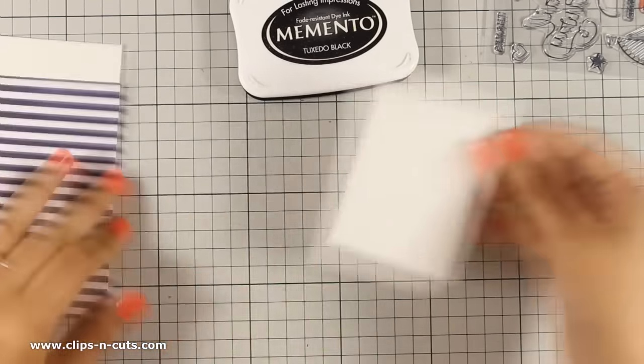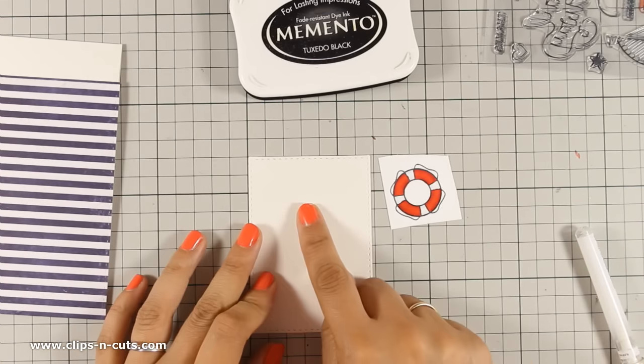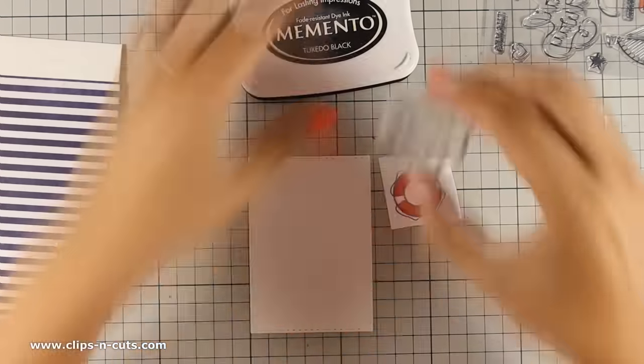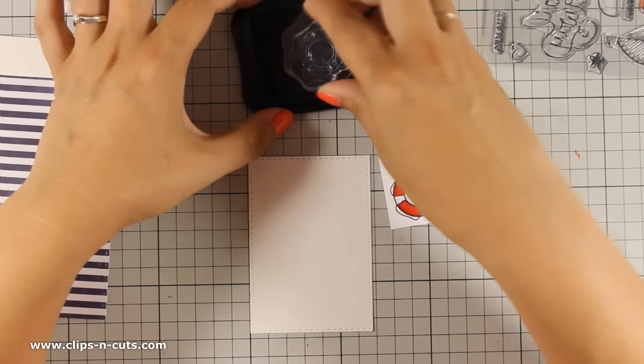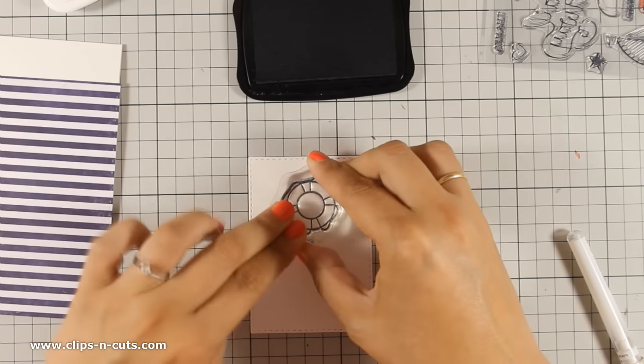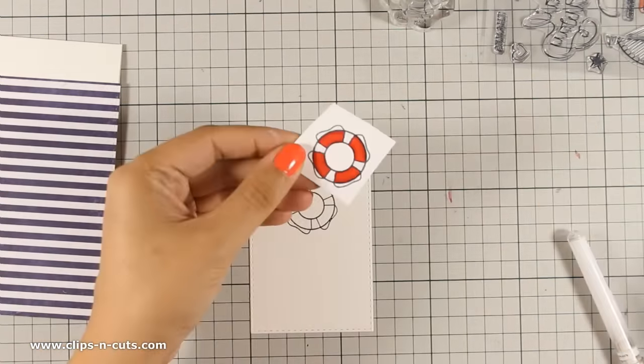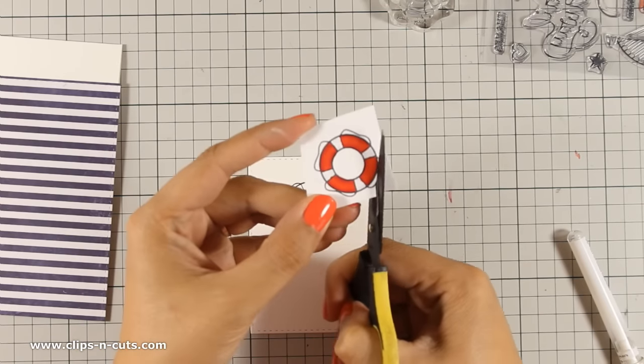Now as you can see there are some lines outside the lifesaver but I won't be paying any attention to that because I am going to stamp it on my main frame. So I am using black ink to stamp the lifesaver and now I will go ahead and cut out my lifesaver without cutting out all those black lines.